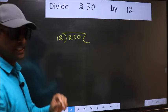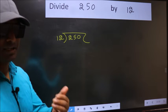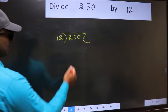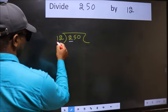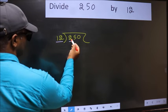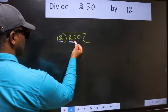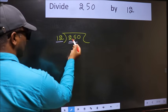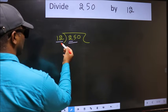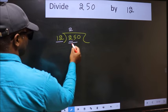This is your step 1. Next, here we have 2 and here 12. 2 is smaller than 12, so we should take two numbers. 25. A number close to 25 in 12 table is 12 times 2, 24.